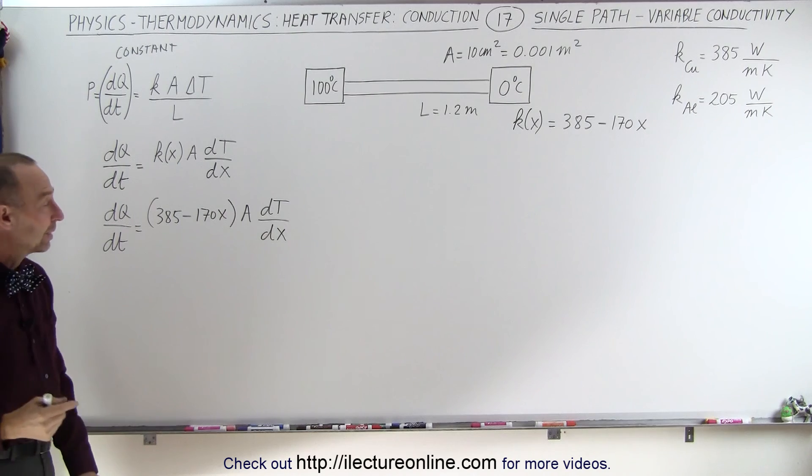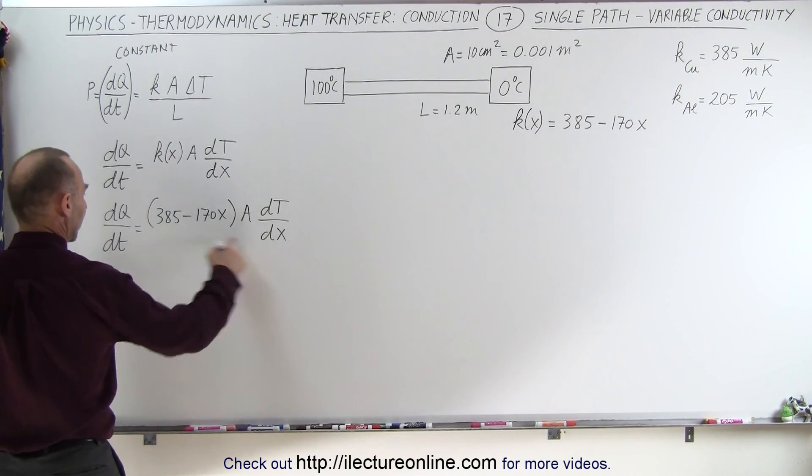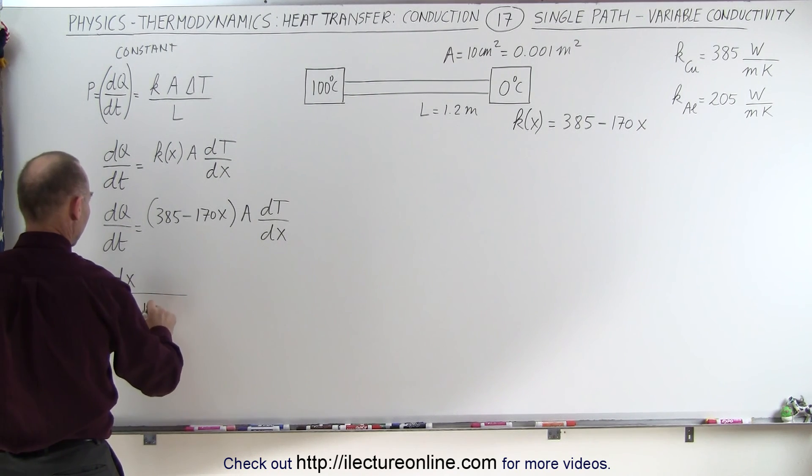And now you can see that we need to separate the variables. Moving this to the other side, and this here, the dx goes to the numerator, and we have 385 minus 170x in the denominator.